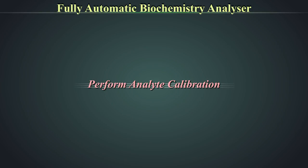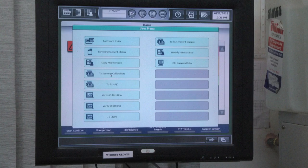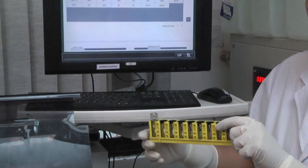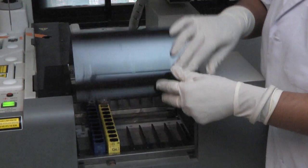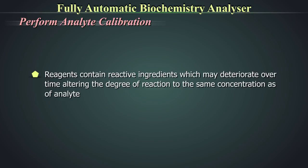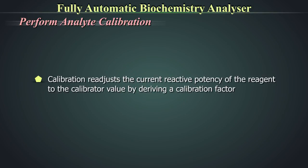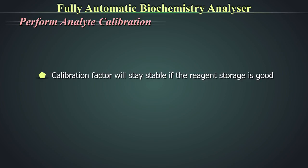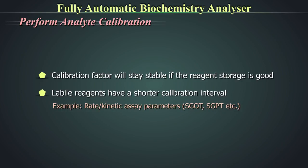During a reagent check, the system automatically orders reagent blank and calibration check for all parameters. Calibrate the analytes requiring calibration. Calibrators are materials with known values traceable to the SI unit through an unbroken chain of comparisons. Reagents contain reactive ingredients that may deteriorate over time, altering the degree of reaction to the same concentration of analyte. A calibration readjusts the current reactive potency of the reagent to the calibrator value by deriving a calibration factor. If reagent storage is good, the calibration factor will remain stable till the expiry of the reagent. Based on the stability of reagents, the manufacturer will recommend a separate schedule for each analyte; labile reagents have a shorter calibration interval.